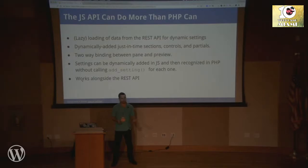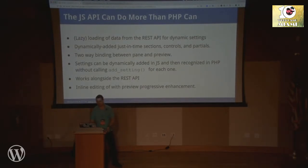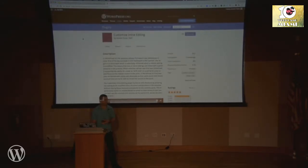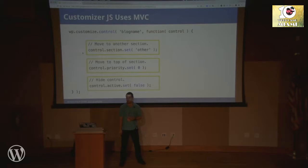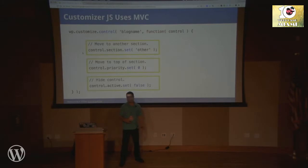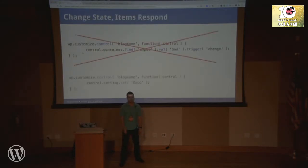JavaScript really unlocks that potential for custom controls. There's also inline editing — a plugin called 'Customize Inline Editing' lets you edit title and excerpt for posts inline in the Customizer. The Customizer is backbone-like — its own JavaScript application similar to Backbone models. When working with it, you want to set items using methods like control.section.set or control.priority.set rather than manipulating the DOM directly. You update that state and the Customizer will react.